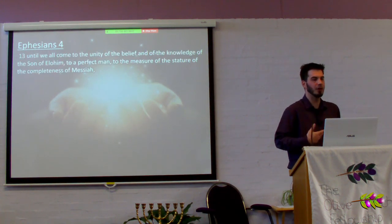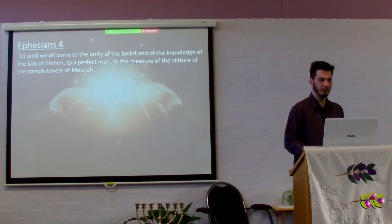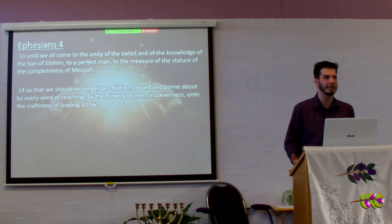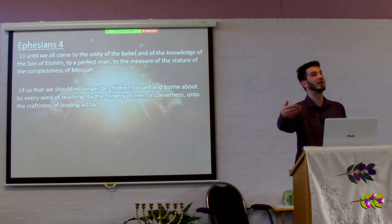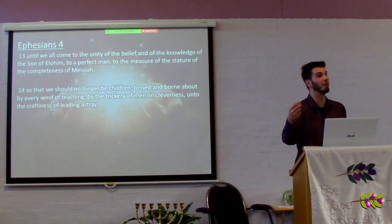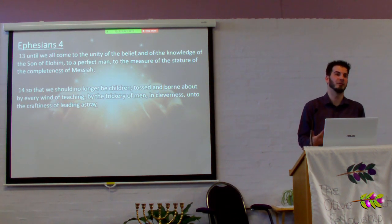'Until we all come to the unity of the belief and of the knowledge of the Son of Elohim, to a perfect man, to the measure of the stature of the completeness of Messiah, so that we should no longer be children.' Is Yah marrying a child bride? No. It was common for a child to be betrothed, but consummation and the wedding itself wouldn't occur until the bride was mature enough. If you're not spiritually mature enough, you're not the bride.